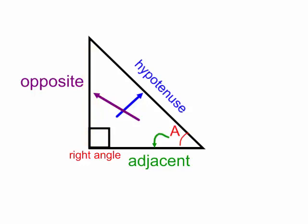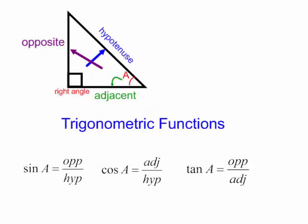We'll be using these terms when we work with trig functions. Here are three trig functions. The sine of angle A is the length of the opposite side divided by the length of the hypotenuse. The cosine of angle A is equal to the length of the adjacent side divided by the length of the hypotenuse.